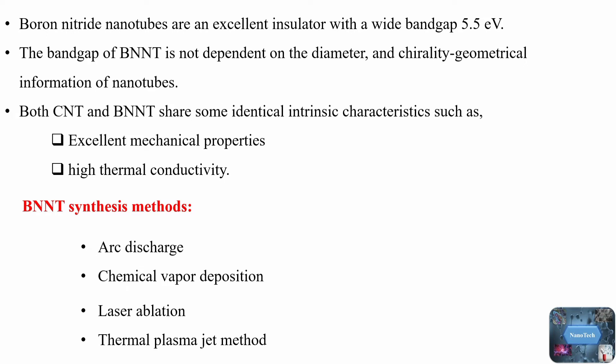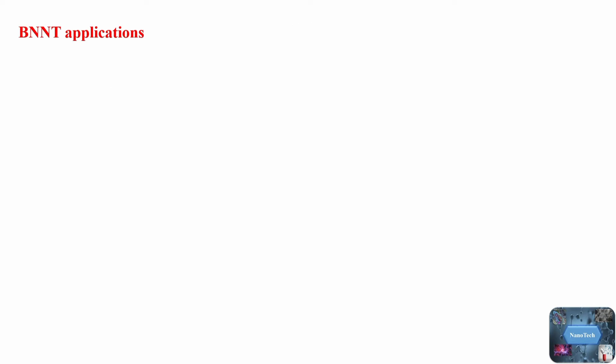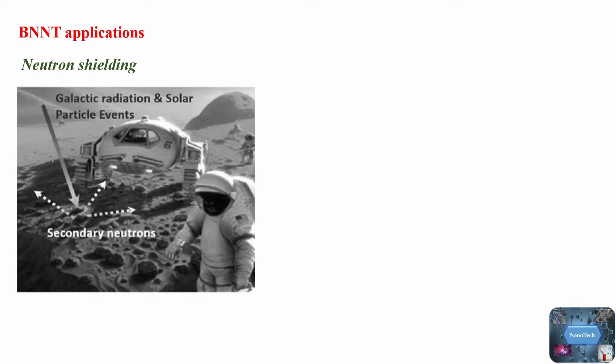Applications of BNT — neutron shielding: Space radiation plays an important role in limiting any long-duration travel due to its effect on astronauts, space structures, and electronic equipment. These radiations are composed of ionizing and non-ionizing radiations. The primary concern in space exploration is ionizing radiation, due to the particles' high energy levels which ionize matter on contact. Ionizing radiation can be divided into three categories: solar particle events, galactic cosmic rays, and radiation trapped in the Van Allen belts around the Earth. Solar particle events and galactic cosmic rays can also form secondary neutron radiation after interacting with matter.